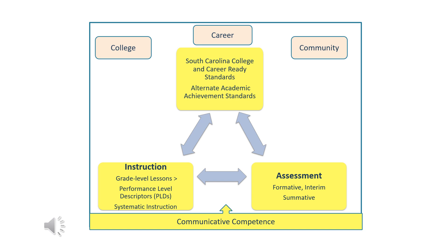To access the general curriculum, we need to consider a system of least prompts. We want all students to be able to independently respond to a prompt. For some students, that may mean full physical prompting, then fading with partial physical, modeling, gesturing, verbal, and instructional prompts — and then being able to respond independently to an instructional prompt. That is the system of least prompts, and this is what is systematic instruction.